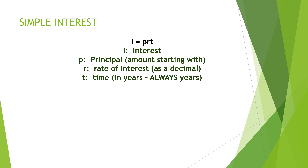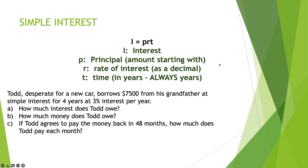Time is always in years — that can get tricky. If they say six months, you have to convert it to half a year. So: I equals PRT. I stands for interest, P is the principal (the amount of money you're starting with), R is the interest rate as a decimal, and T is the time in years.